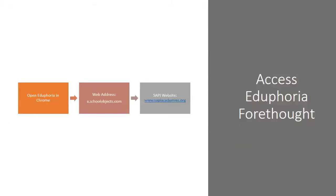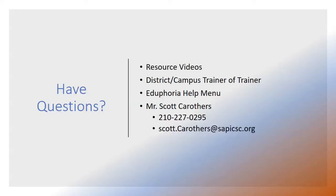In getting access to Eduphoria Forethought or any Eduphoria applications, it is recommended that you use Google Chrome. It is also recommended that you bookmark or favorite the link for easy access in the future. If you have any problems getting access, you can contact Scott Carruthers at 210-227-0295 or send an email at scott.carruthers@sapi-csc.org.